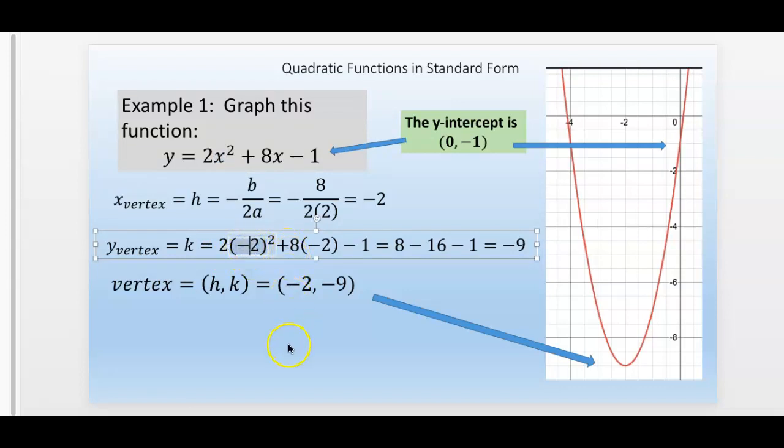Plus 8 times x. Well, x is negative two. Minus one. I got negative nine. And that is where the vertex is.